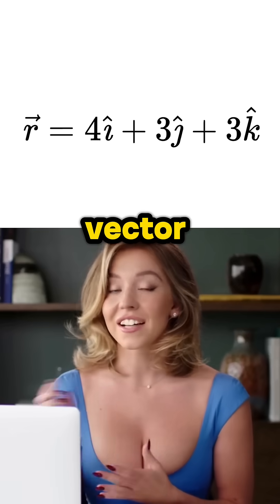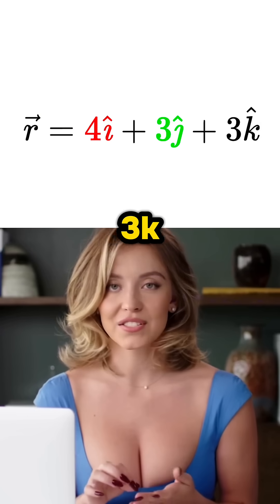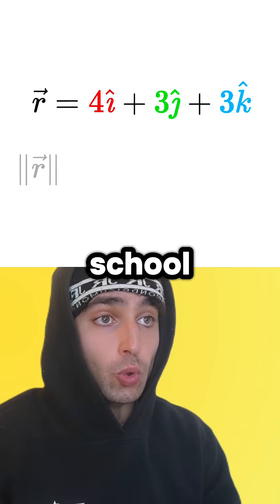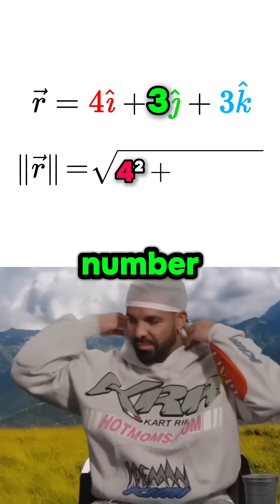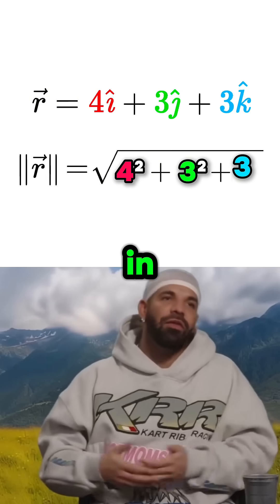Let's find the size of this 3D vector, 4i plus 3j plus 3k. Yo, I already learned this in school. Isn't it just the square root of the number in front of the i squared plus the number in front of the j squared plus the number in front of the k squared?